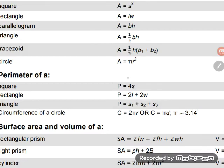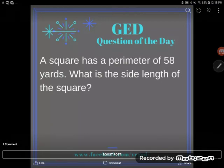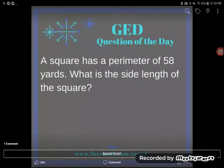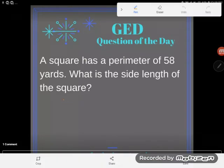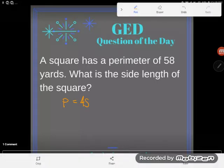Perimeter of a square, P equals 4s, right there dead center. Okay so that's the formula I'd like you to start with. A good step, algebra wise, wise thing to do is always just write out your formula first.